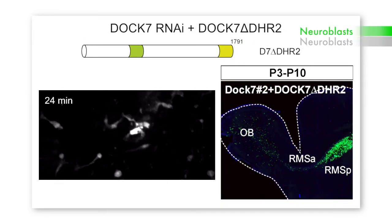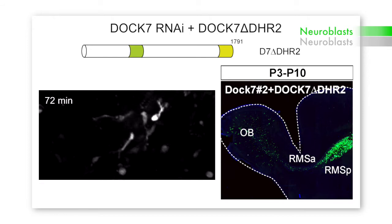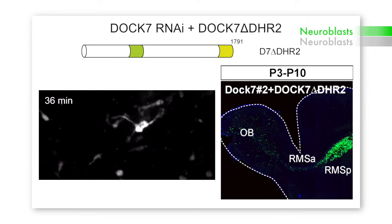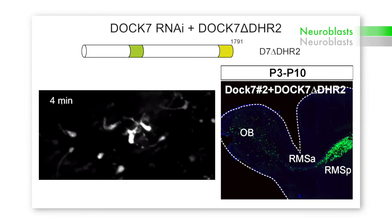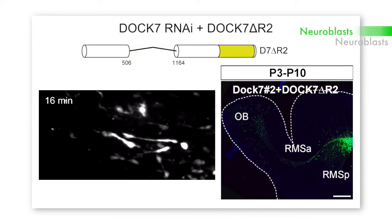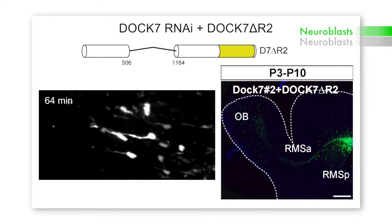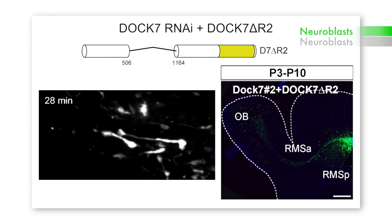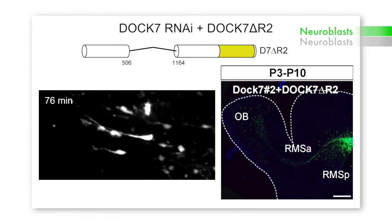DOCK7's catalytic DHR2 domain was required for the growth and stability of the leading process, probably by activating the same RAC and microtubule-dependent pathway by which DOCK7 promotes axon elongation. In contrast, DOCK7 mutants that contain the DHR2 domain but lack a different region of the protein were able to support leading process extension, but not the forward movement of the cell soma.